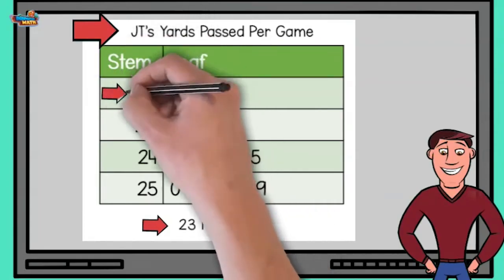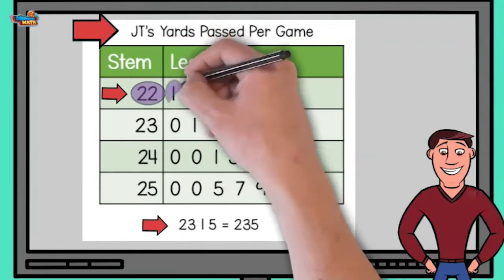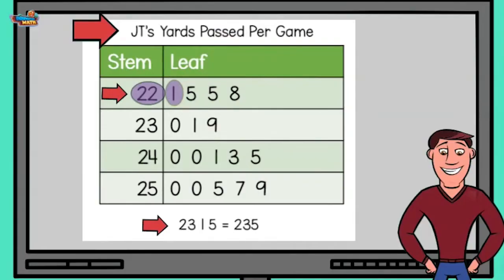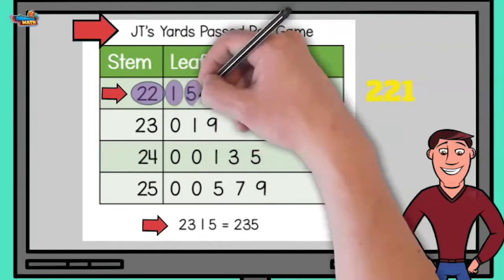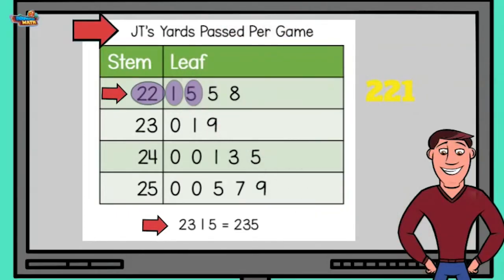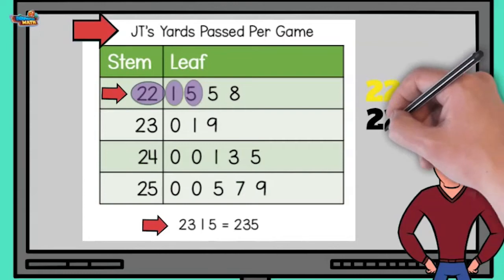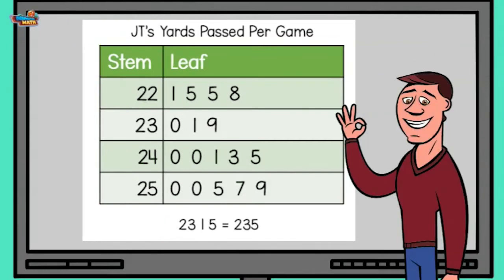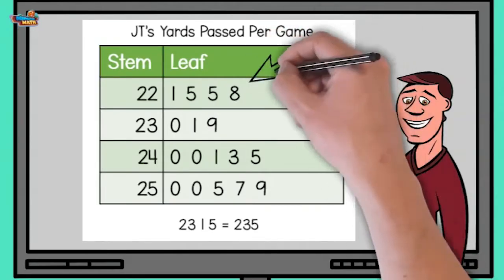Taking a look at the first stem, 22, and the first leaf, 1, we can say that in one game you threw 221 yards. The second leaf is a 5, meaning in that game you threw 225 yards. I am pretty good — have I mentioned that?